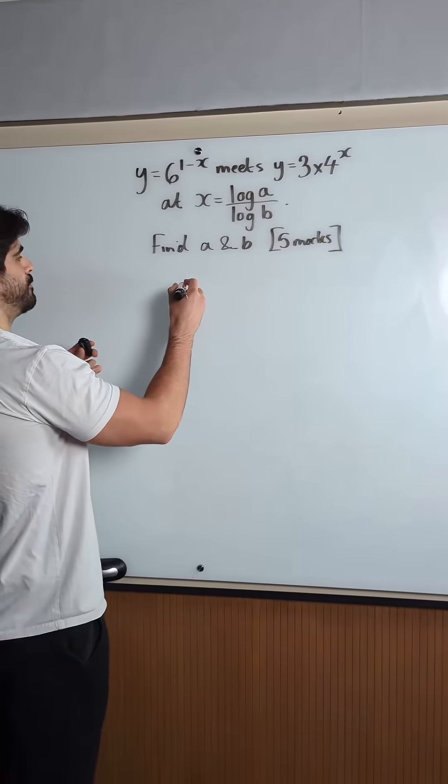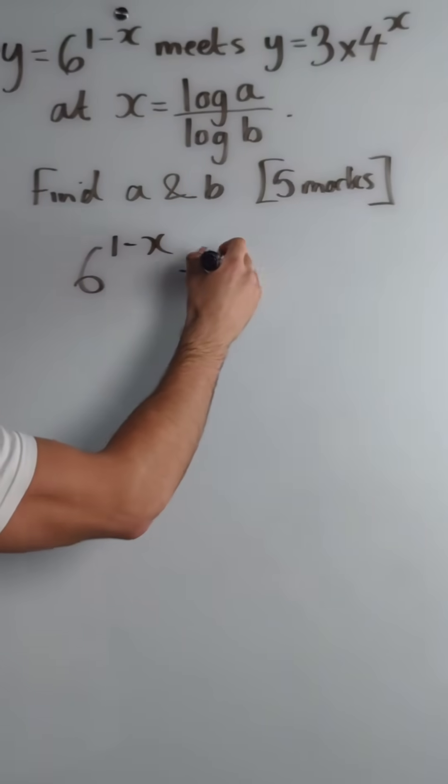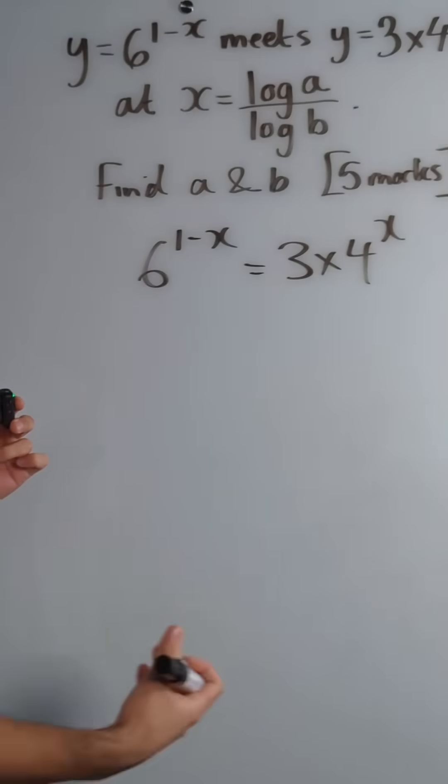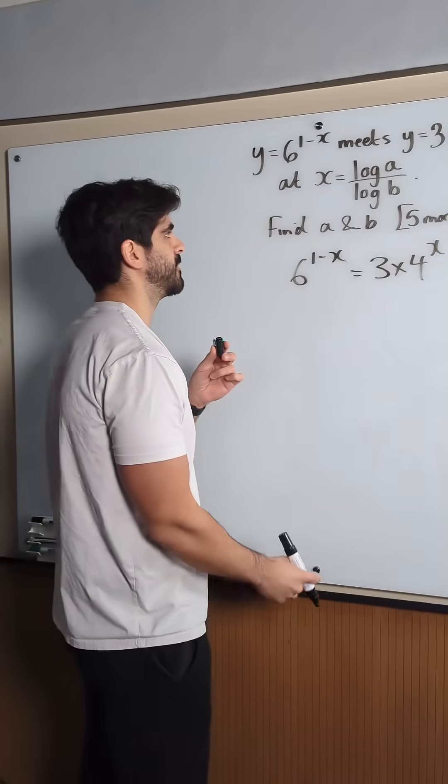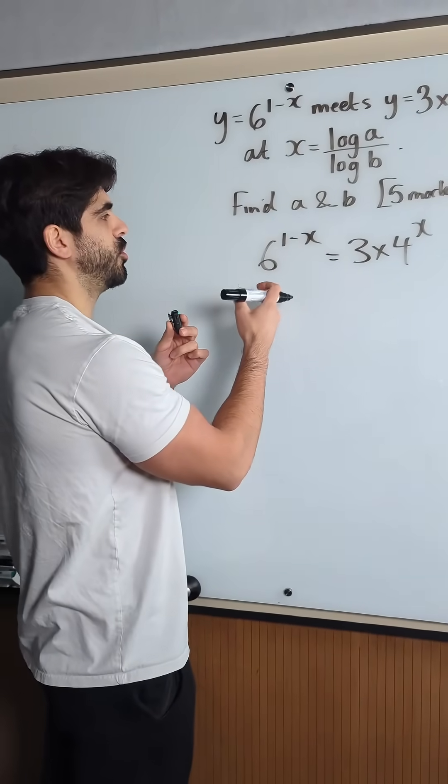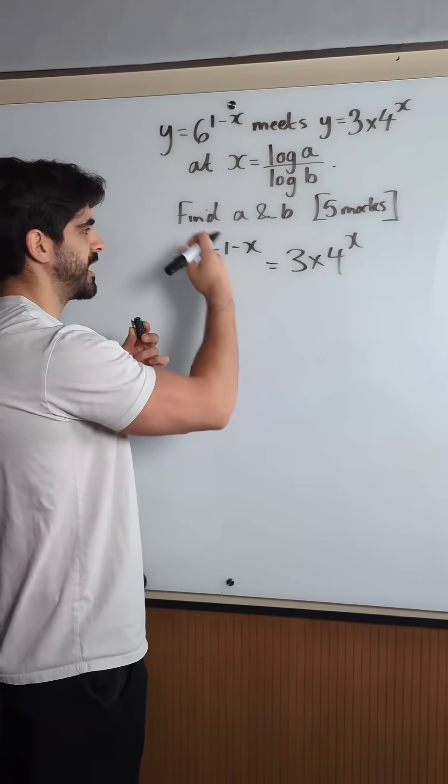Nice and easy. So meeting is a simultaneous equation, you just equate the two equations. Now usually what I tell students to do is if they don't tell you the answer, usually they do do this in exams though,